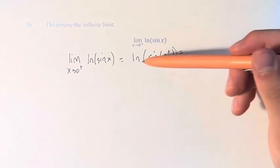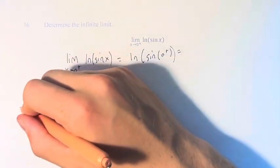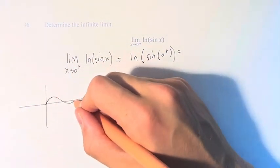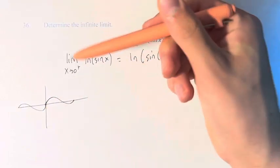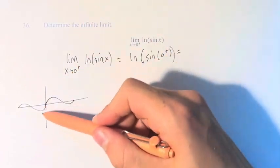And so the value of sine at 0, if we graph it, is approaching 0. And if we're coming from the right, we're also approaching 0 from the right.